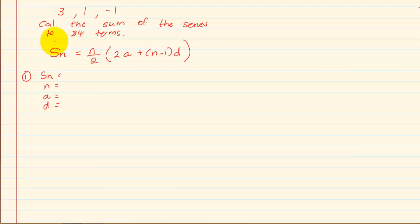What have they given us? We don't have SN because they are telling us to calculate the sum. That would be SN. But we do have N which is 84.